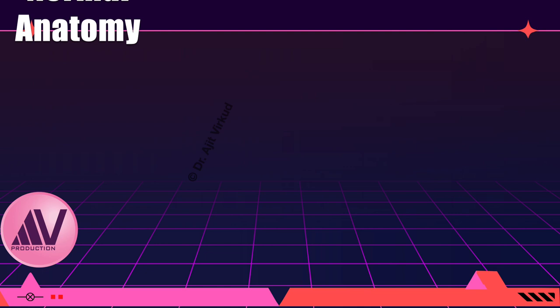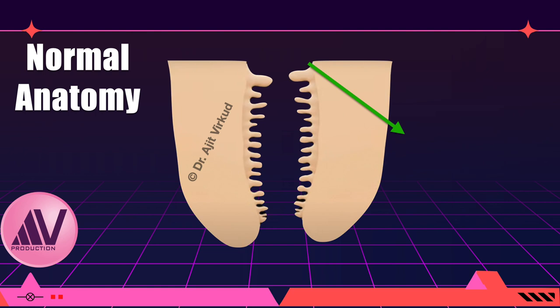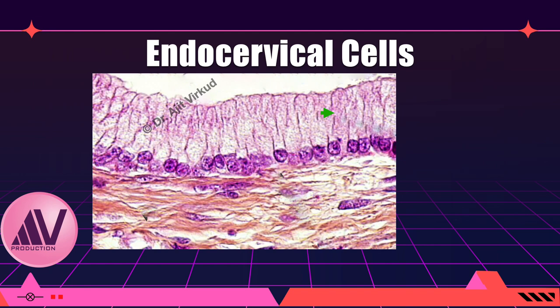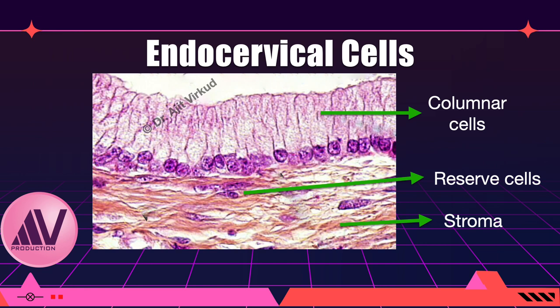Look at the magnified view of the cut section of the endocervix. The inner surface of the endocervix is irregular as it is formed by numerous mucosal folds called endocervical crypts. This microscopic picture shows actual endocervical cells. The innermost layer is a single layer of tall columnar cells with basal nuclei. Between the columnar cell layer and the stroma are few cells called the reserve cells. These reserve cells are bipotent — they undergo mitosis and replace the columnar cells that are shed, and under certain circumstances they can also form squamous epithelium.